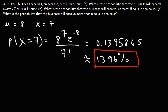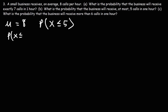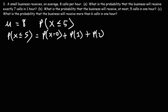Now let's move on to part B: what is the probability that the business will receive at most 5 calls in 1 hour? Mu is still 8. We want the probability that x is less than or equal to 5. This equals P(x=0) plus P(x=1) plus P(x=2), all the way up to P(x=5). We have to add up the individual probability values.